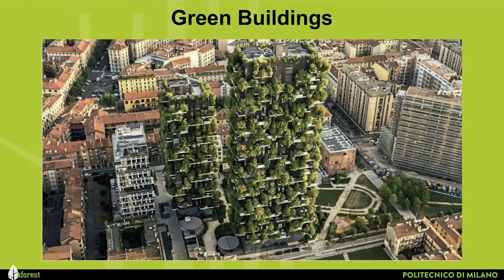In addition to the categories provided by FAO, it would be important to add another category of urban forestry typology: green buildings, increasingly important in our cities. This additional category relates to buildings and complexes of buildings with trees and shrubs structurally embedded in the façade and roofs. In the slide you can see the Bosco Verticale in Milano.